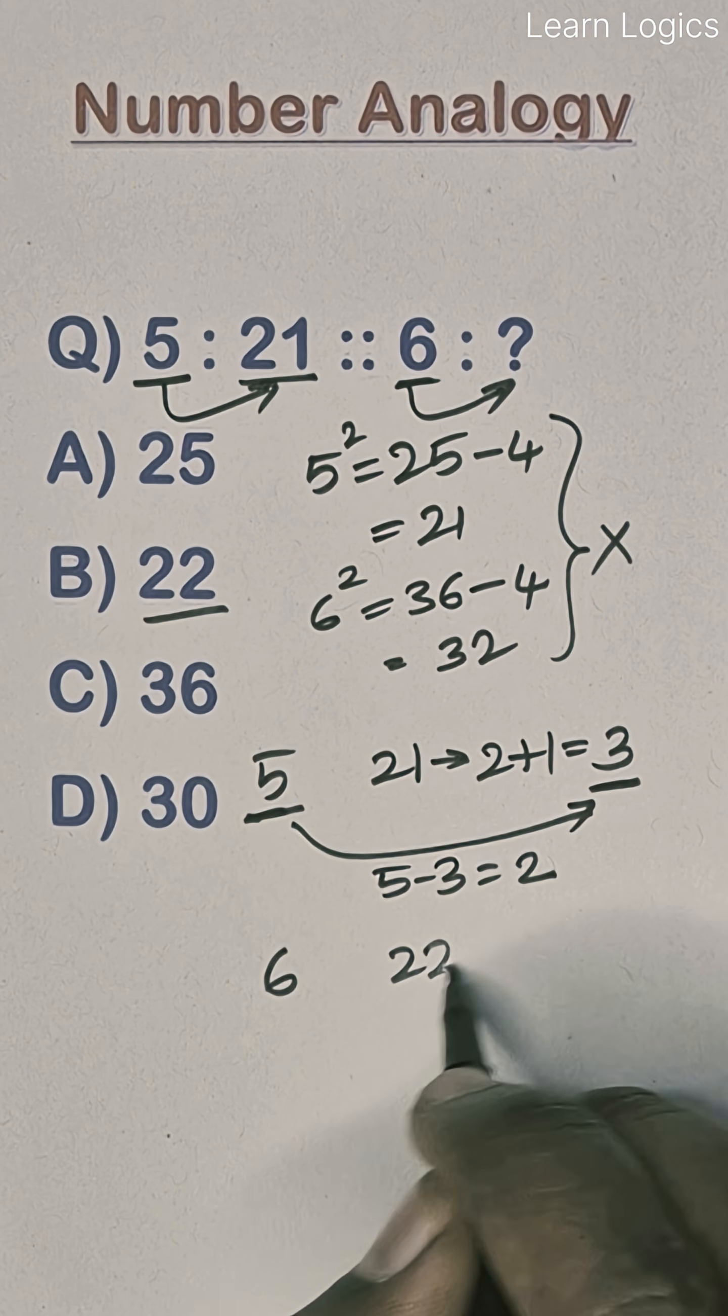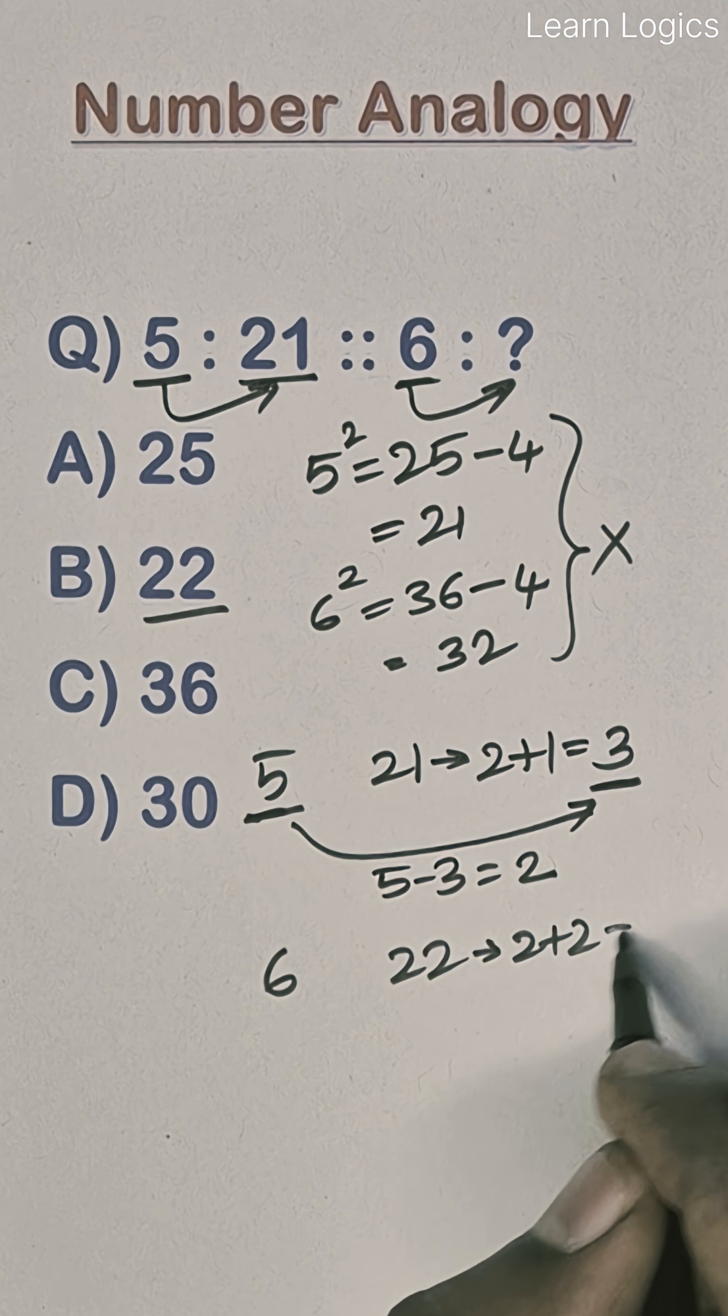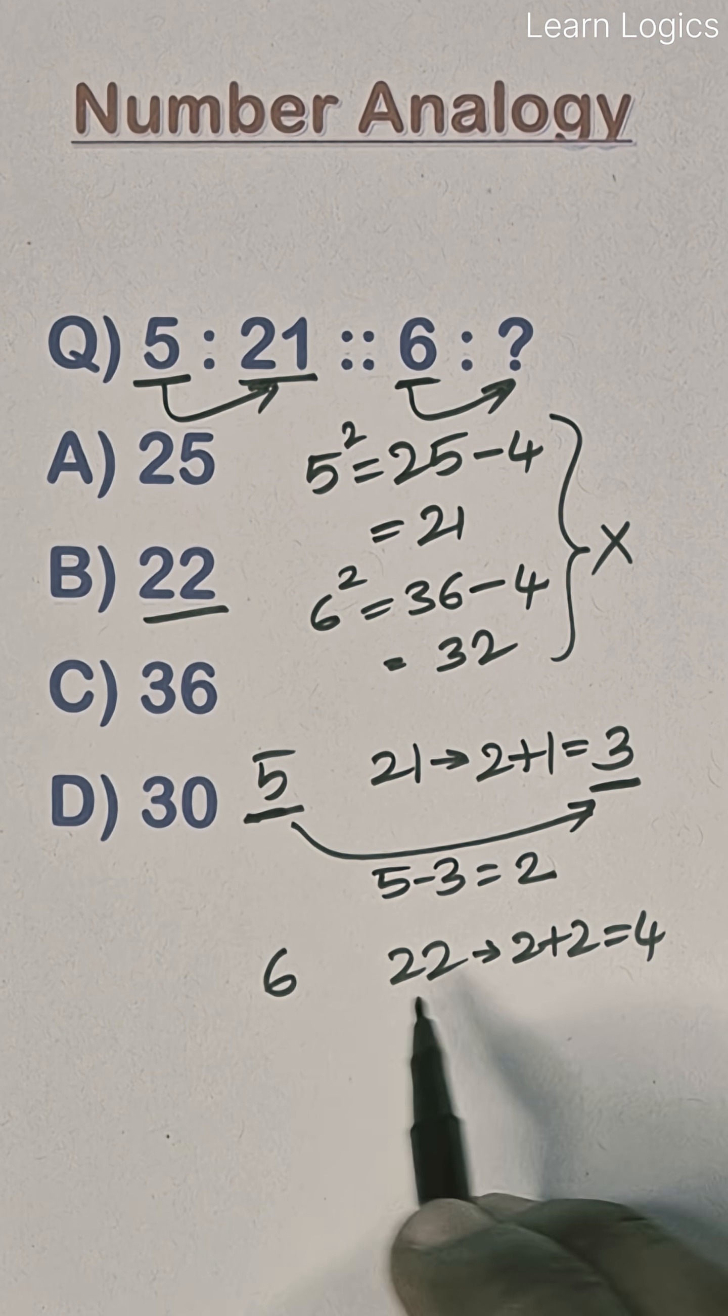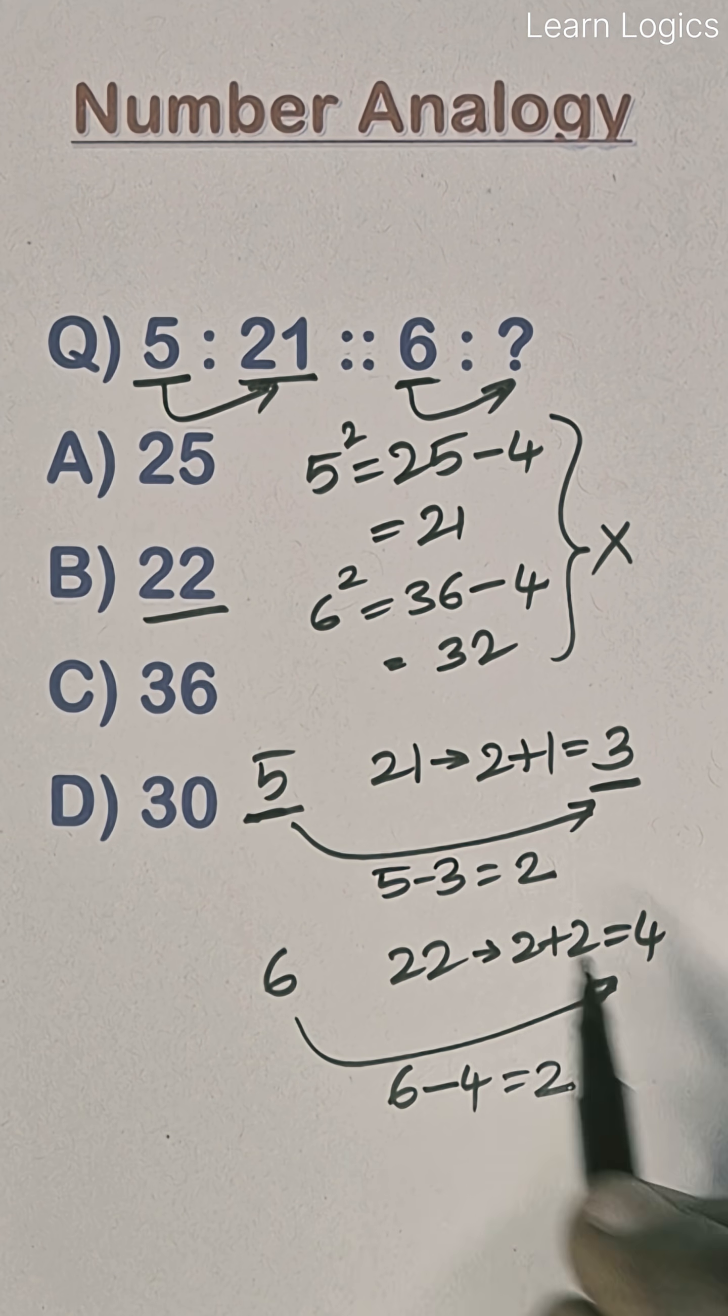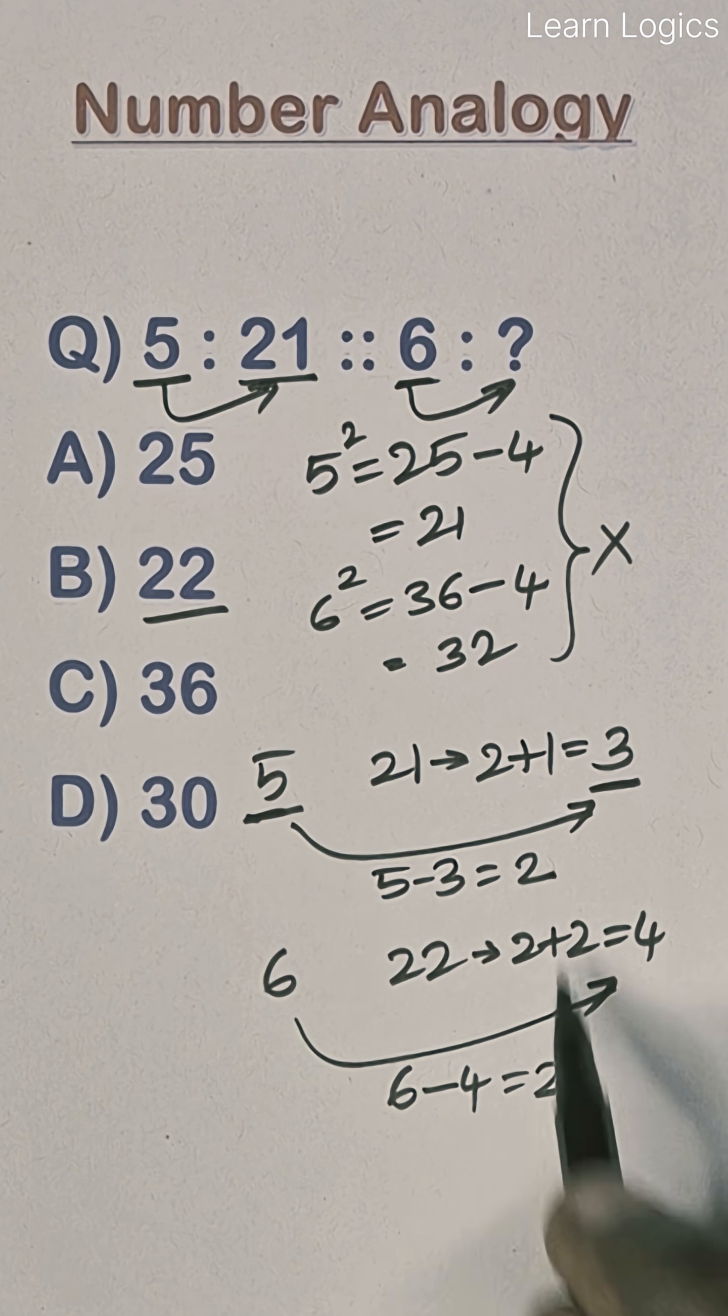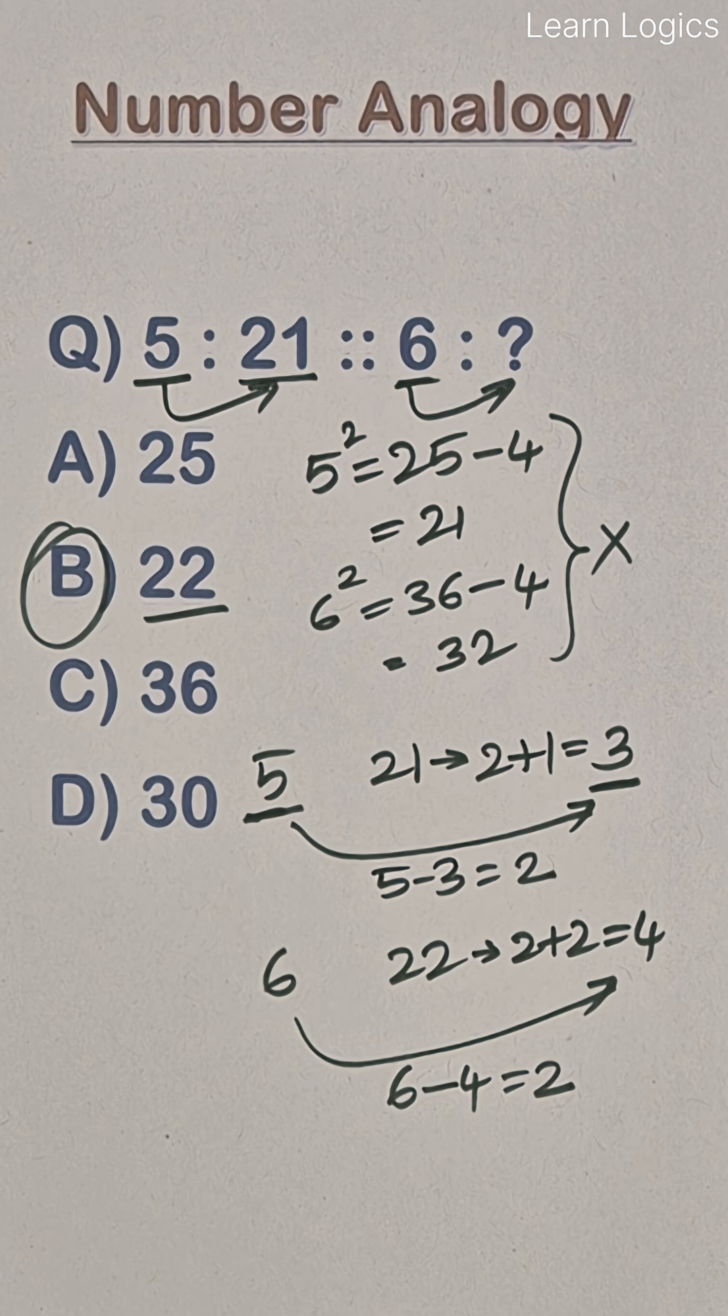2 plus 2, 2 plus 2 is 4. Subtract 6 minus 4 is 2. So both are matching, so option B is the correct answer.